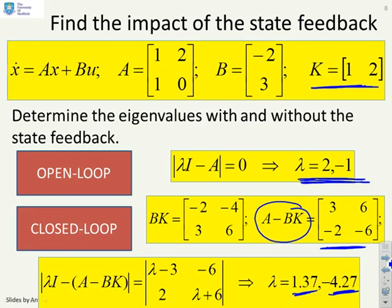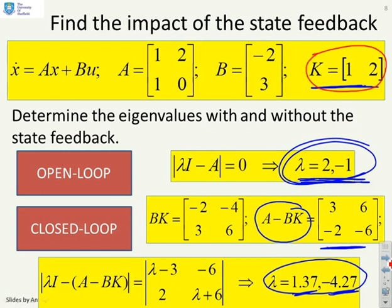Well, it's clear that those are different, so the closed-loop poles are different from the open-loop poles. But if I was to ask you, is there a clear link between this change and what you chose K to be, you might be struggling and saying, well, I know it's made a difference, but I don't know why and how.